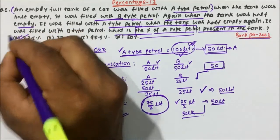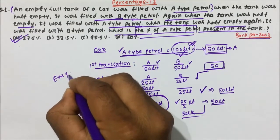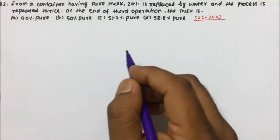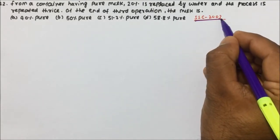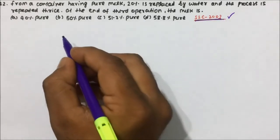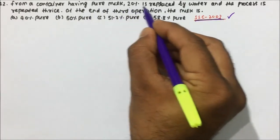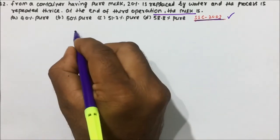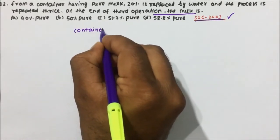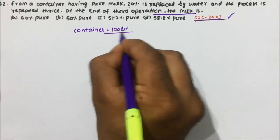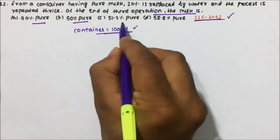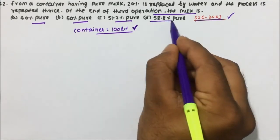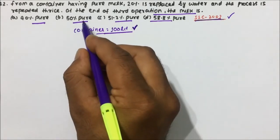So 37.5% is the correct answer and option A is correct. This is a straightforward problem — just write each transaction step by step and you get the answer. Question 2 is also very important, asked in SSC 2003. From a container having pure milk, 20% is replaced by water, and the process is repeated thrice. Suppose the container has 100 litres of pure milk.